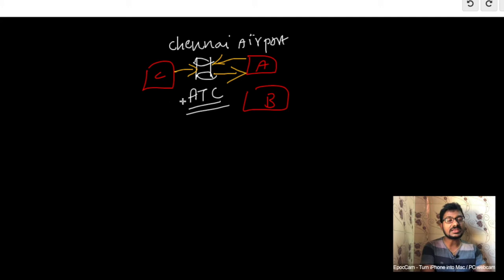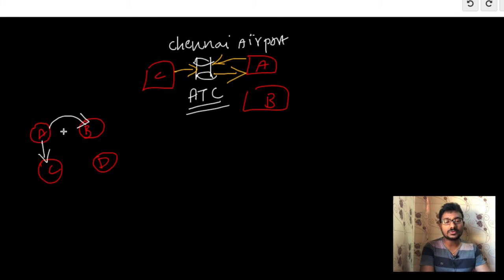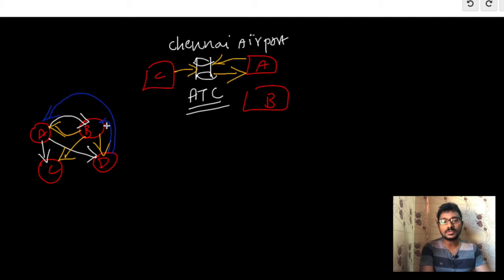ATC is a mediator. Now consider another example where multiple objects — A, B, C, and D — are trying to communicate with each other directly. If A needs to communicate with B, C, and D, there must be connections from A to B, A to C, and A to D. Similarly, B needs connections to A, C, and D, and D needs connections to A, B, and C. This results in very complex communication between all objects.